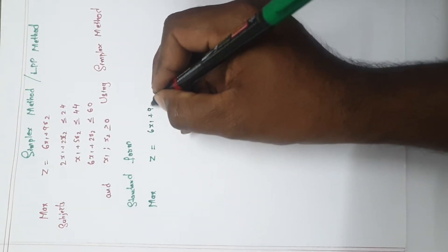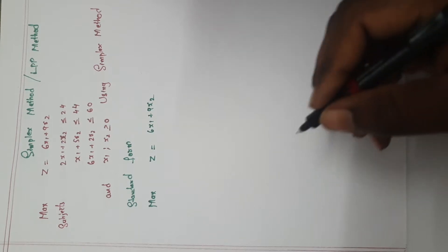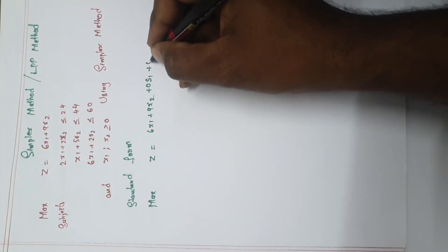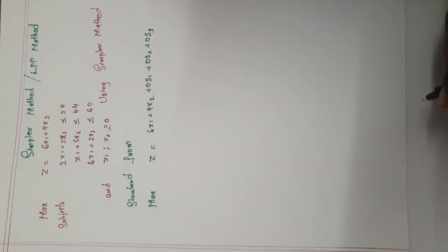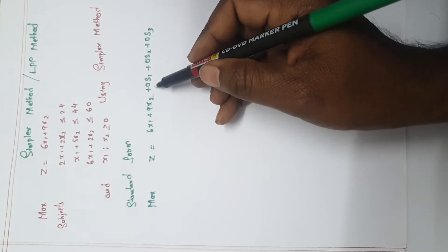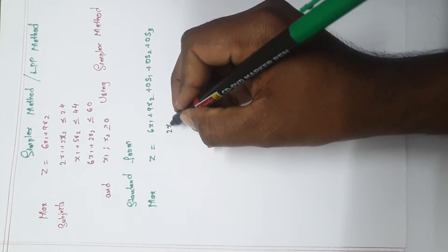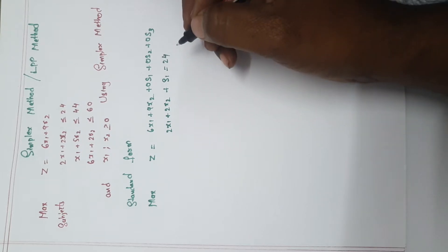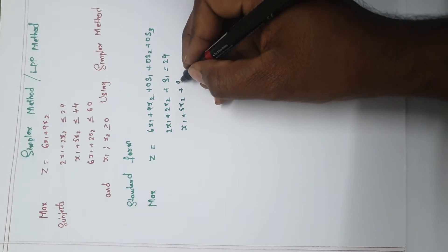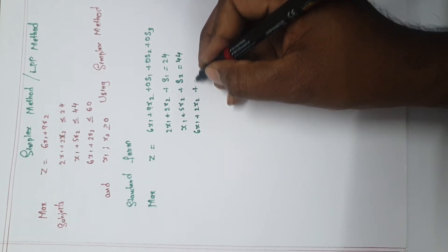The objective function is z = 6x1 + 9x2. How many equations are given? Three. So you write 0·s1, 0·s2, 0·s3 — three times because three equations are given. So z = 6x1 + 9x2 + 0·s1 + 0·s2 + 0·s3.